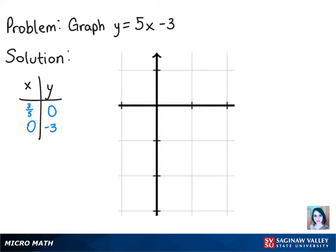So let's graph 0 comma negative 3. And then we can graph 3 fifths comma 0. And then connecting those points gives us our line.